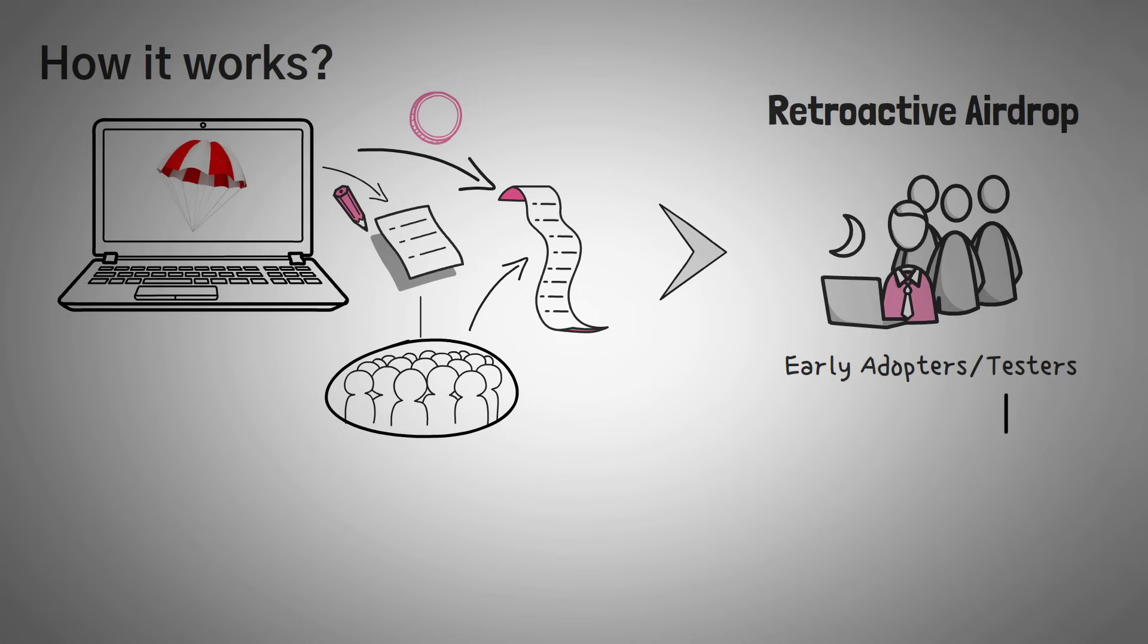A lot of times this happens with governance tokens. These platforms want to give the community a way to vote on future changes in a fair way. In other words, they need to reward early adopters and not random users.